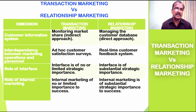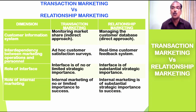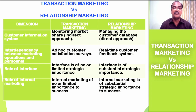The sixth dimension is interdependency between marketing operations and personnel. With regard to transaction marketing, ad-hoc customer satisfaction surveys are conducted to understand this aspect. Whereas in relationship marketing, a real-time customer feedback system is the supportive aspect used to study the interdependency between marketing operations and personnel.